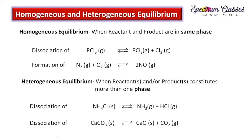Another example of a heterogeneous system is the dissociation of calcium carbonate (solid): on heating, CaCO3 (s) dissociates into CaO (s) plus CO2 (g). Here we have two different states: two species in solid state and one in gaseous state. If all reactants and products are in the same phase, it is homogeneous equilibrium; if they constitute more than one phase, it is heterogeneous equilibrium.